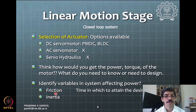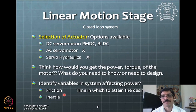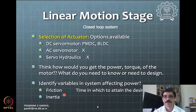Friction is often a much higher consideration than inertia, especially for slow-moving systems and systems that have spring-loaded elements to enhance accuracy. This enhancement in accuracy and backlash reduction comes at a cost — you pay extra power to overcome the additional friction caused by the spring loading of two elements.